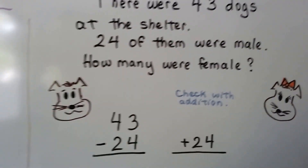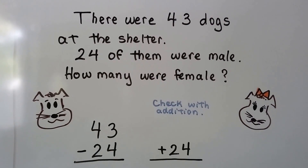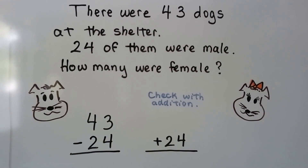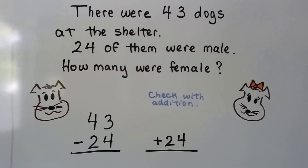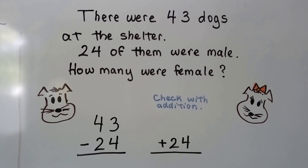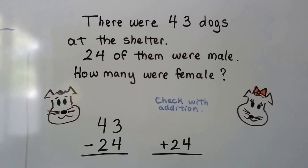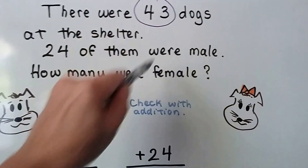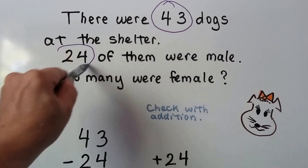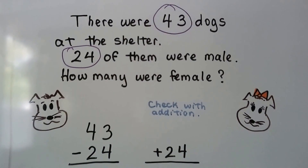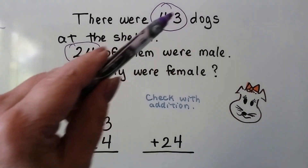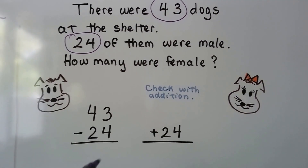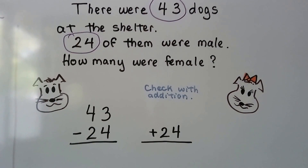Let's take a look at this one. There were 43 dogs at the shelter; 24 of them were male. How many were female? We circle the important numbers: 43 minus 24. When we find the difference, that's how many females there will be.